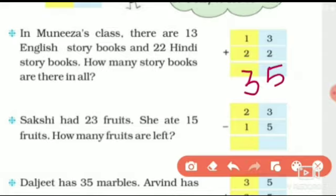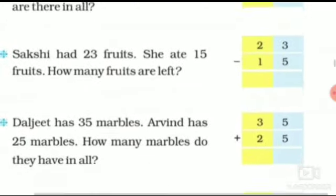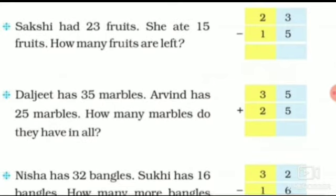Now let's see the next sum. Shakshi had 23 fruits. She ate 15 fruits. Shakshi ke paas kitne fruits se total? 23. Usme se usne kitne khai liye? She ate 15 fruits. How many fruits are left? Ab kitne bache hai? 23 total, aur usme se 15 usne khai liye hai. So what we will do? Agar humko find karna hai ke kitne bache hai, toh hum log karenge minus — that is subtraction.